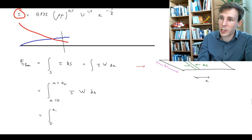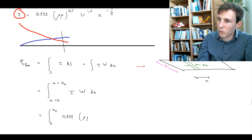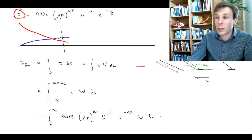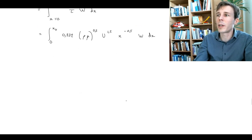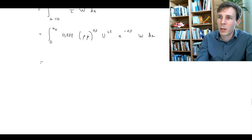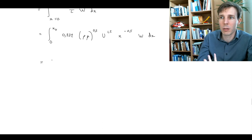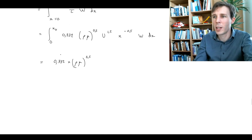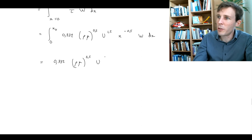Substituting tau into the integral, we have the integral from 0 to x_transition of 0.332 times (rho mu)^0.5 times u^1.5 times x^(−0.5) times W times DX. This looks intimidating, but since we're integrating with respect to x, only x itself depends on x. All other terms come out of the integral: 0.332 times (rho mu)^0.5 times u^1.5 times W.